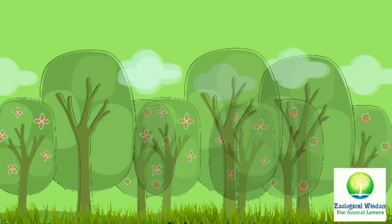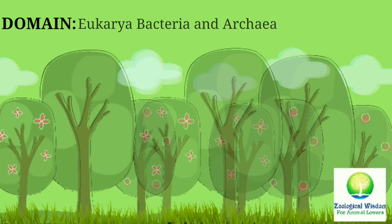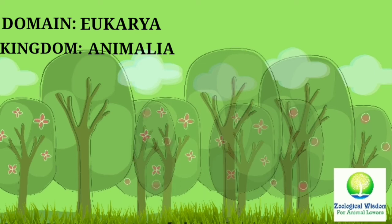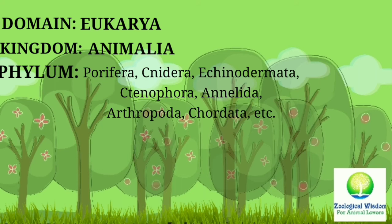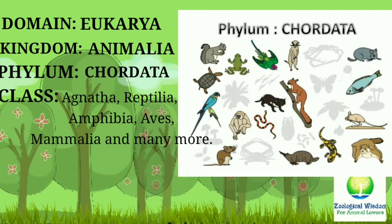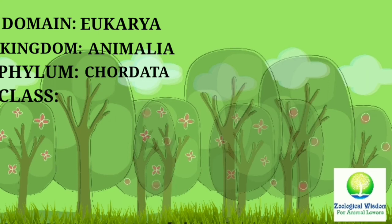Let us consider the taxonomic hierarchy for the Royal Bengal Tiger. First comes the Domain — there are three domains: Eukarya, Bacteria, and Archaea. Domain Eukarya consists of kingdoms like Animalia, Plantae, Fungi, and Protista. In Kingdom Animalia there are many phyla like Porifera, Cnidaria, Echinodermata, Ctenophora, Annelida, Arthropoda, Chordata, etc. In Phylum Chordata there are classes like Agnatha, Reptilia, Amphibia, Aves, Mammalia, and many more.